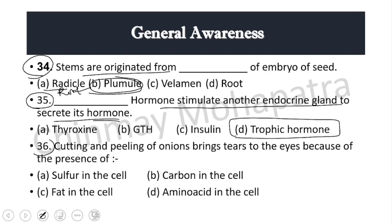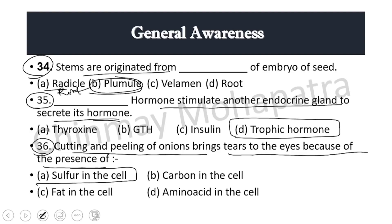Question 36: Cutting and peeling of onion brings tears in the eyes because of the presence of — when you cut onions, why do tears appear? Right answer: due to the presence of sulfur in the onion cells.